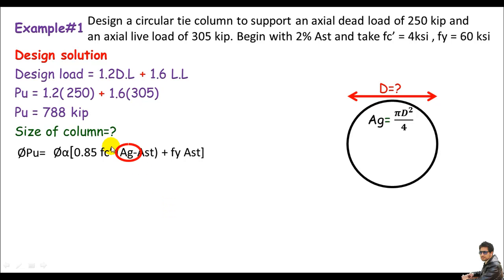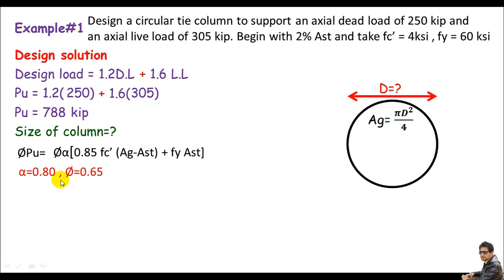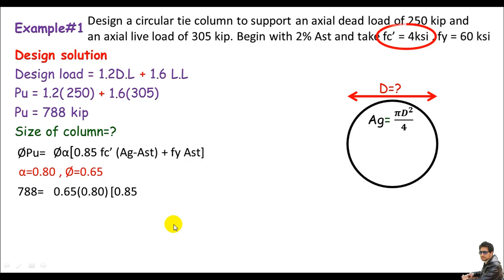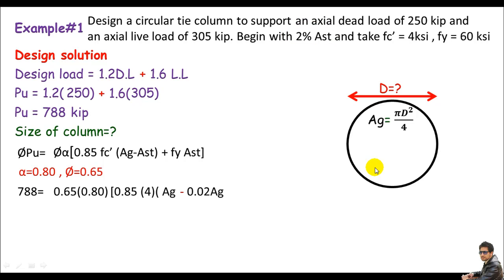Once I calculate Ag from the design load equation, I can get the diameter. From previous lectures, for a tied column: α = 0.80 and φ = 0.65 (for spiral columns this is slightly different). Plugging in: Pu = 788 kip = 0.65 × 0.80 × [0.85 × 4 ksi × Ag − 0.02·Ag + 63 ksi × 0.02·Ag], where Ast = 2% of Ag = 0.02·Ag.